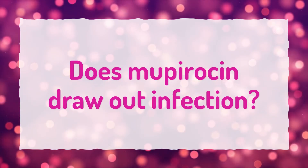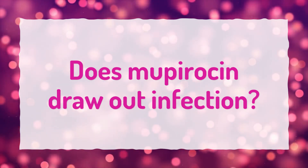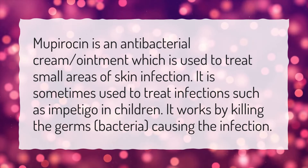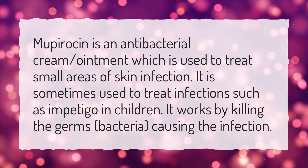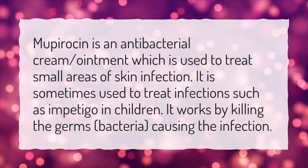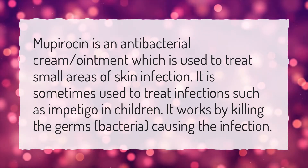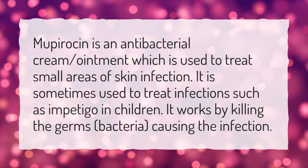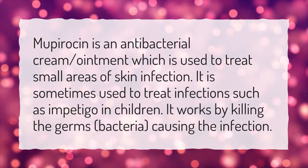Does Mupiracin draw out infection? Bactroban ointment is an antibacterial cream or ointment which is used to treat small areas of skin infection. It is sometimes used to treat infections such as impetigo in children. It works by killing the germs, or bacteria, causing the infection.